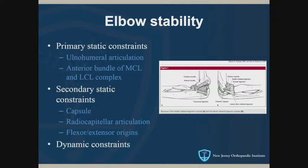Just a quick slide on the ligamentous constraints of the elbow. There are primary constraints: the bony ulnohumeral articulation, the anterior bundle of the MCL, and the LCL complex. Secondary static constraints include the capsule, the radiocapitellar articulation, and the flexor-extensor origins. And then there are also dynamic constraints, which are the muscles that cross the elbow, such as the brachialis.